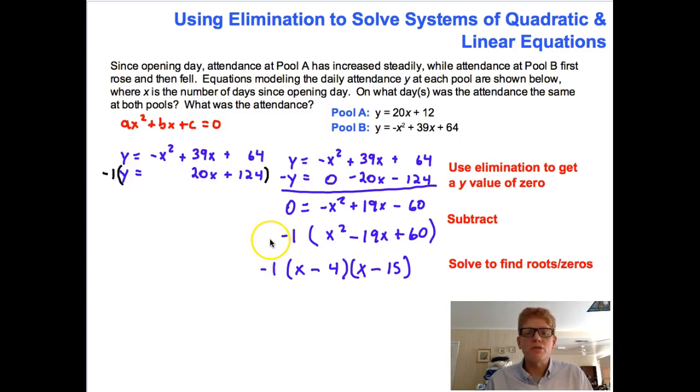So what we'll wind up with is that x is equal to 4 and x is equal to 15. So technically, that's an or there. x is equal to 4 or x is equal to 15. Now, all that's left is to find the y values for our coordinates, and we'll have our solutions.